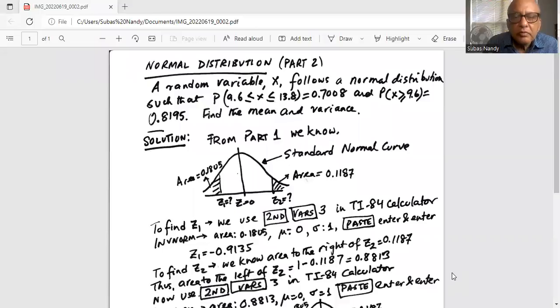So without further ado, I'll share my screen with you. A normal variable x follows a normal distribution such that probability of x between 9.6 and 13.8 inclusive is 0.7008 and probability of x greater or equal to 9.6 is equal to 0.8195. Find the mean and the variance.